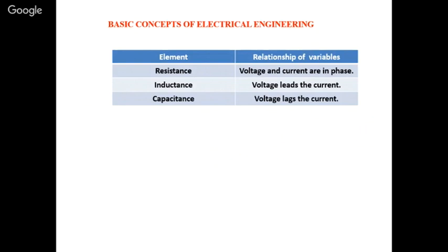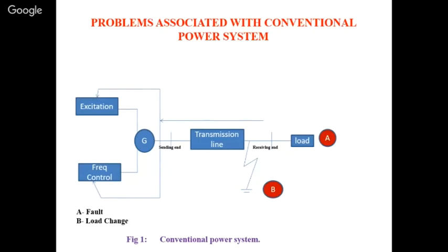A very basic fundamental: in resistance, voltage and current are in phase; in inductance, voltage leads the current; in a capacitor, voltage lags the current. The key difference between a real system and a FACTS system is that in FACTS we are generating virtual resistance, virtual inductance, and virtual capacitors, whereas in conventional systems we use actual resistance, actual inductance, and actual capacitance.